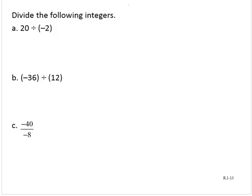Divide the following integers. For division, we have the same rules as for multiplication. Same signs or same sign, the quotient is positive. Different signs, the quotient is negative.